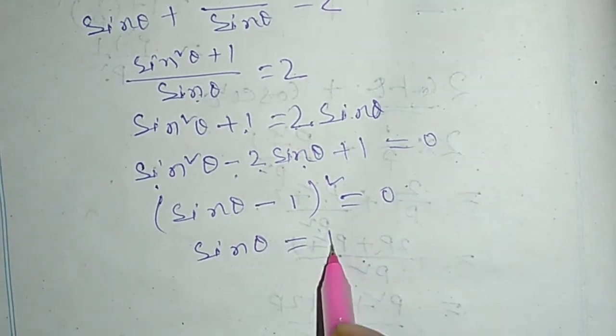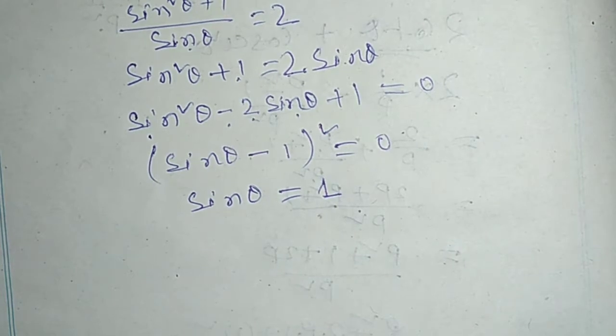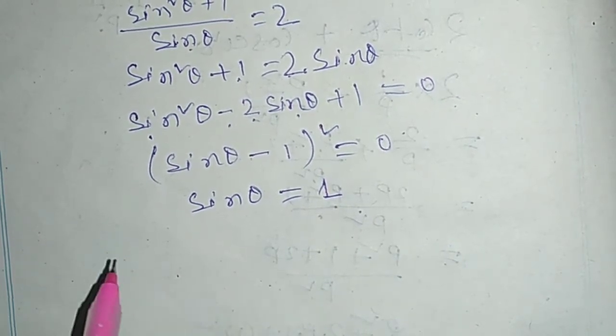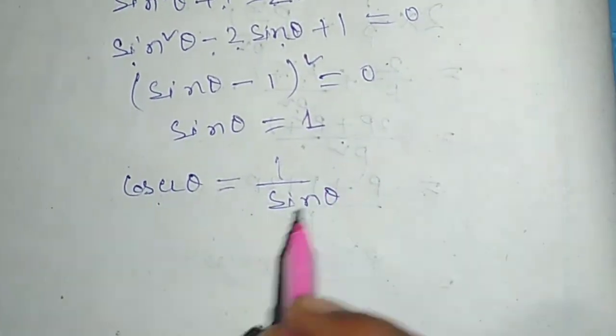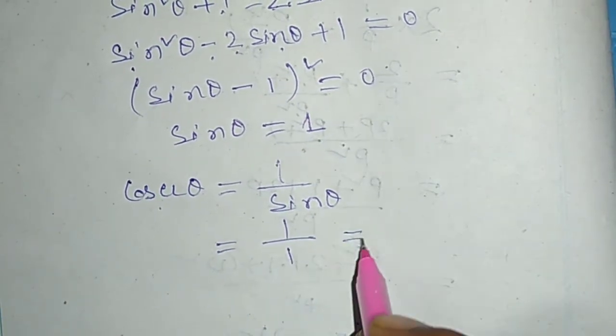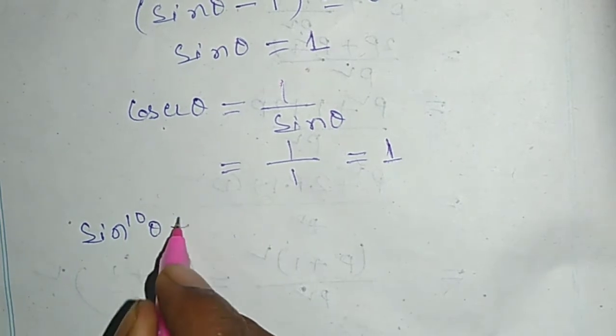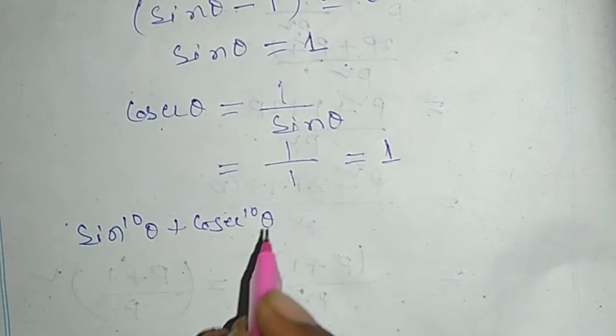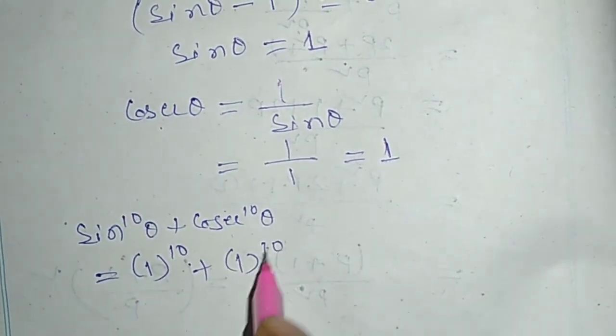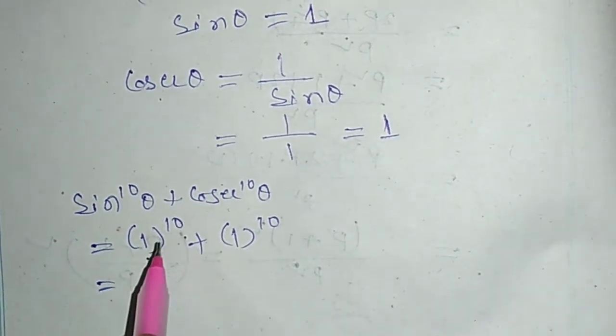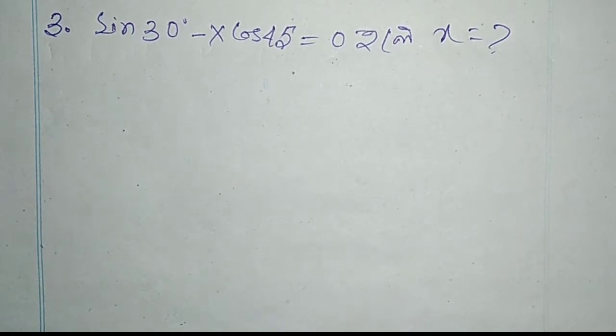(sin θ - 1)² equal to zero. That means sin θ equal to 1. cosec θ equal to 1 by sin θ, which equals 1. sin^10 θ plus cosec^10 θ equals (1)^10 + (1)^10.